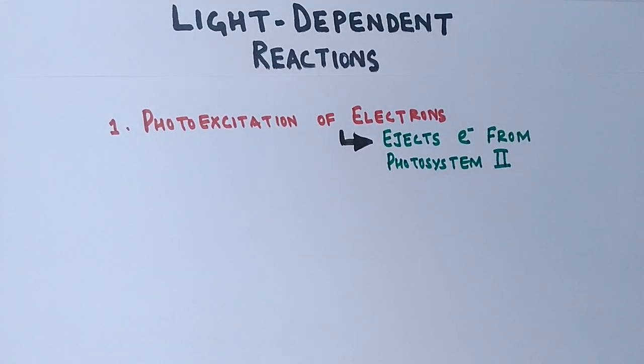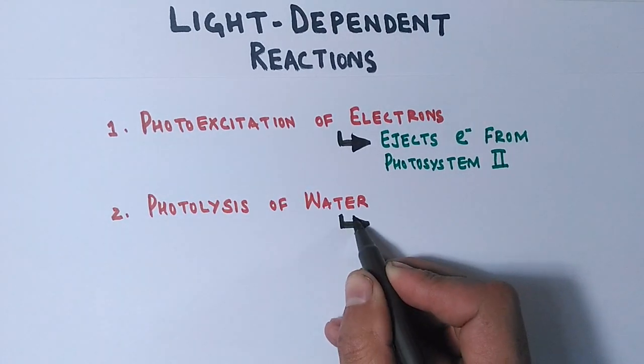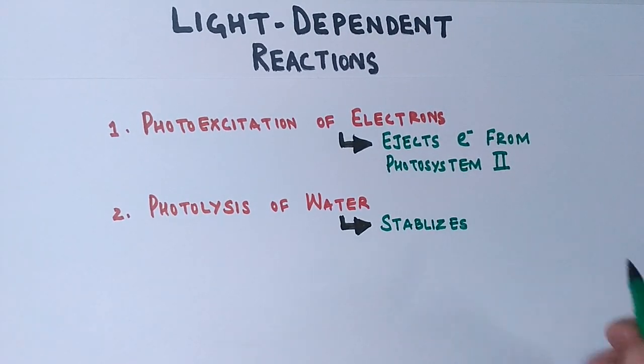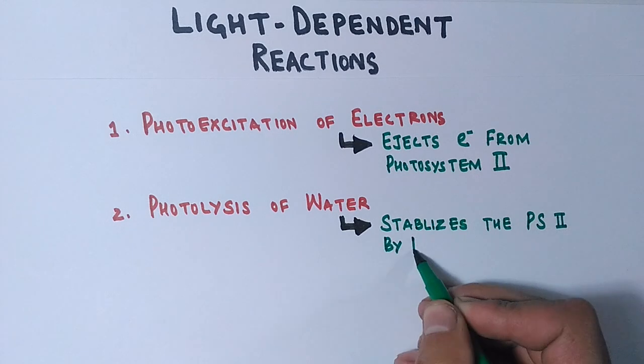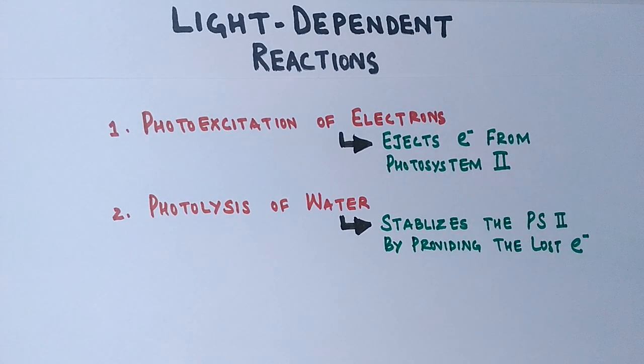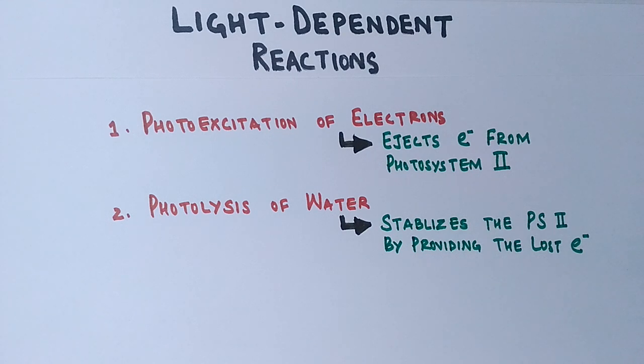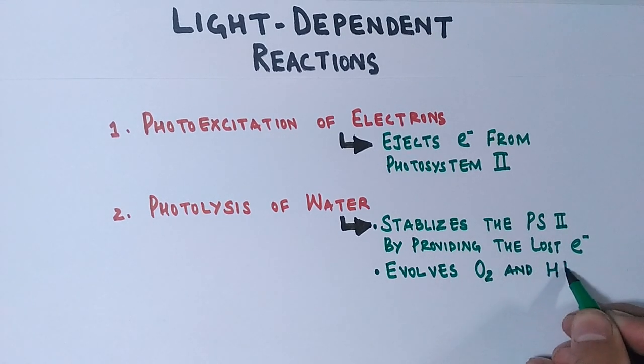The second reaction that occurs here is the photolysis of water molecules, in which we see it stabilizes photosystem 2 by providing the lost electron. How does it stabilize it? By the absorption of light energy, the water molecule gets split into oxygen molecules and gives up electrons and protons.